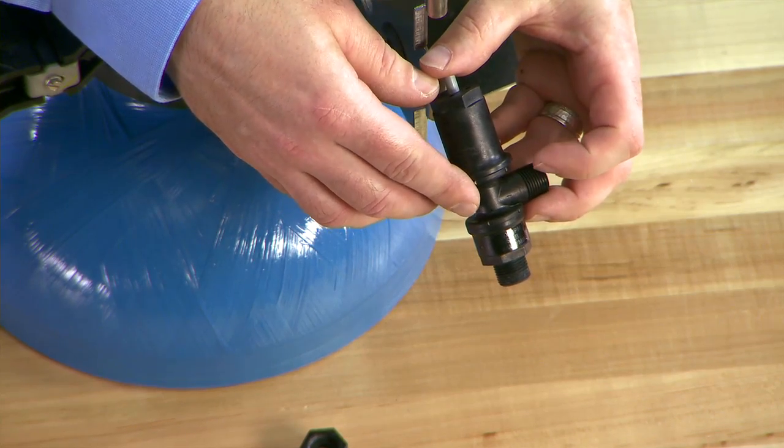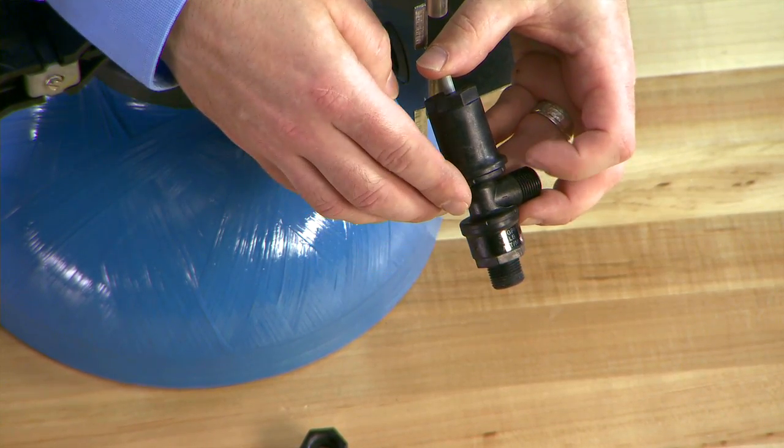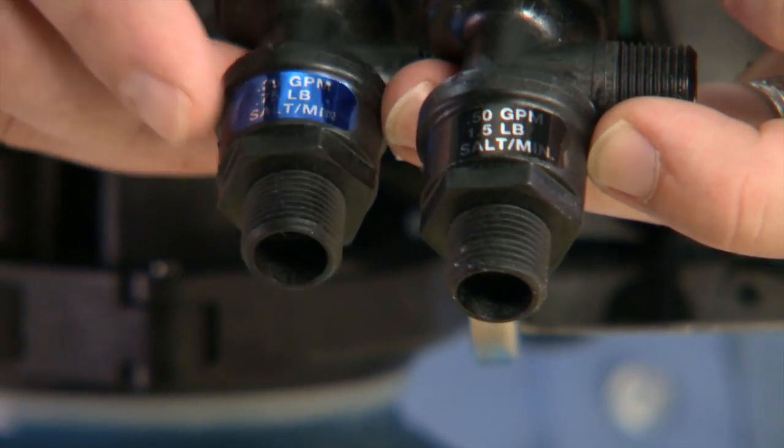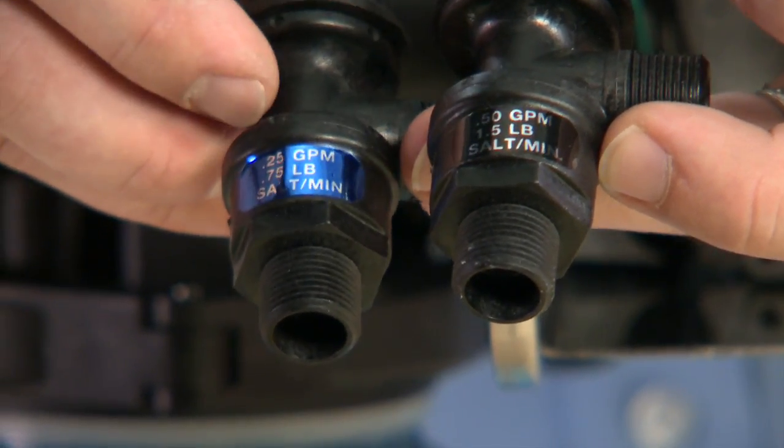This is our plastic 1600 brine valve. This particular unit is rated for 0.5 gallon per minute. If you need to replace the valve, please make sure to match the brine line flow control.